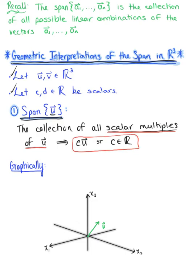Suppose our scalar c is greater than 0. That means we're producing a parallel vector moving in a positive direction infinitely. If the scalar c is less than 0, it's going to be moving in the opposing, negative direction, infinitely. And this is the span of that vector — the collection of all possible linear combinations of vector u.